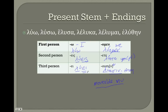To conjugate a verb in the present active indicative, we take our stem and add the endings. A full conjugation would be: 'luo', 'lueis', 'luei', 'luomen', 'luete', 'luousin'. Don't worry too much about accents — that'll come in another lesson.